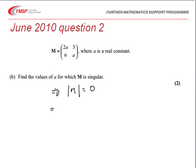And so calculating the determinant of that matrix M, so it's the leading diagonal multiplied together, so that gives us 2a squared, minus the product of the other diagonal, 6 times 3, which is 18, and that must be equal to 0.